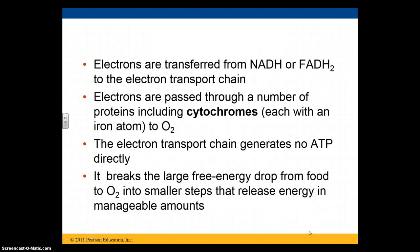The electrons get transferred from NADH or FADH2 — both high-energy molecules — down the electron transport chain. Some of the proteins they're passed through are called cytochromes because they have an iron atom. The electron transport chain itself does not generate ATP, but it breaks the large free energy drop from food to oxygen into smaller steps, and each of those smaller steps releases energy in amounts that the cell can manage.